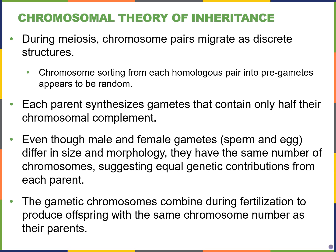Diving into the chromosomal theory of inheritance, we see several aspects that remind us of meiosis. Homologous chromosomes migrate as discrete structures, and homologous pairs assort randomly during metaphase I and are randomly assorted into their gametes. Parent cells are diploid, but the gametes formed during meiosis are haploid — they only have half the number of chromosomes as the parent cells. Even though male and female gametes differ in size, with the female egg being much larger than the male sperm, both are haploid and have 23 chromosomes each, whereas the parent cell has 46, or 23 pairs of chromosomes.